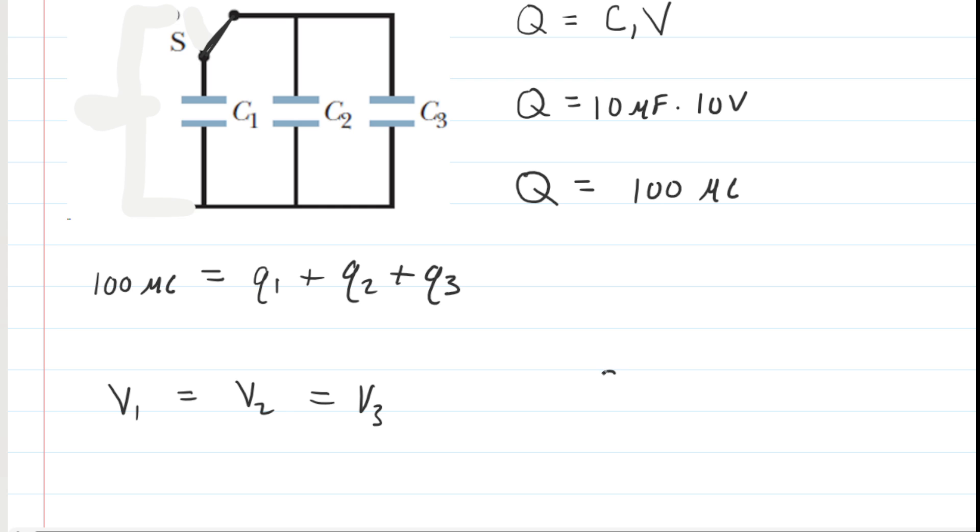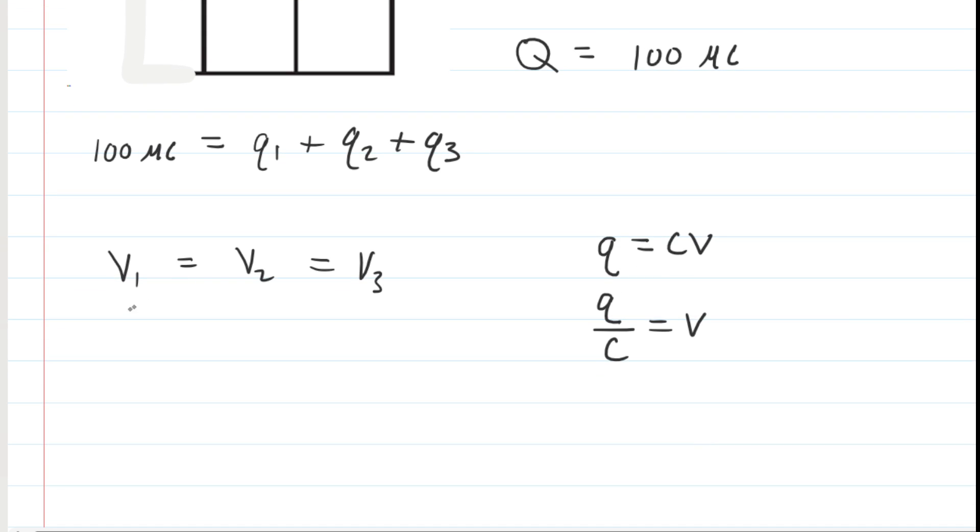Now, revisiting the equation that relates charge, capacitance, and potential difference, if we solve that for potential difference, we would divide both sides by the capacitance. So we could say charge divided by capacitance equals potential difference, which means that we could rewrite this triple equality here.